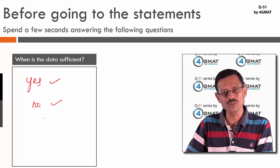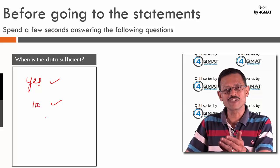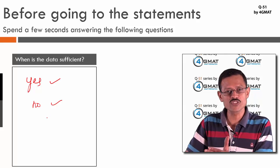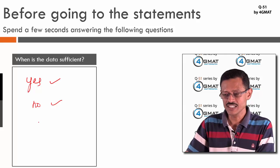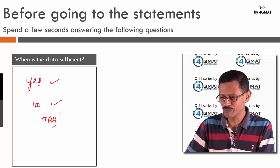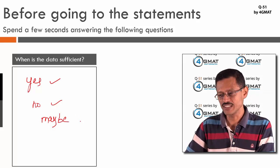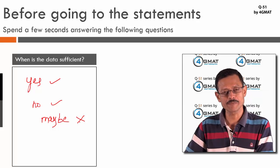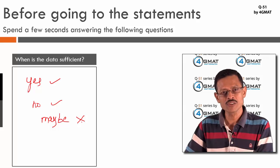When is the data not sufficient? When the answer is a 'maybe' — when I can find one instance where x³ > x² and another where x³ is not greater than x². If it's yes or no, data is sufficient; if it's maybe, data is not sufficient.